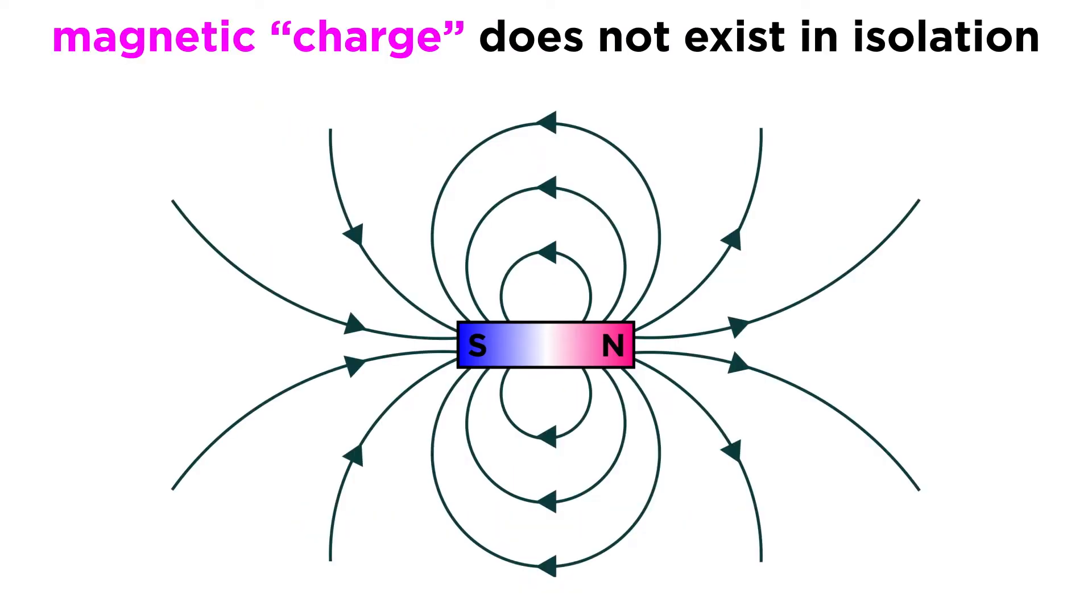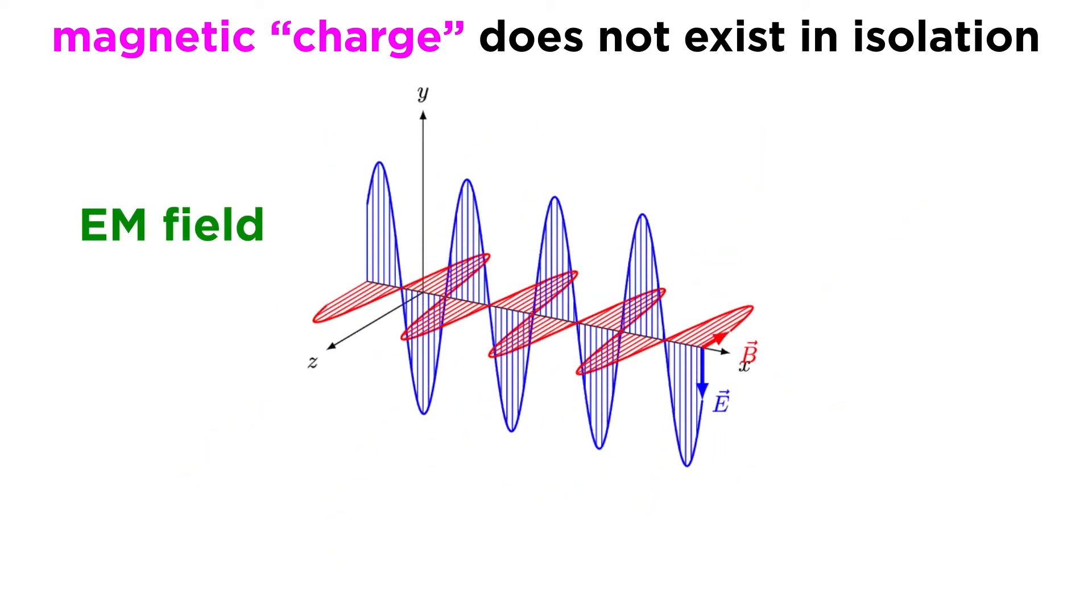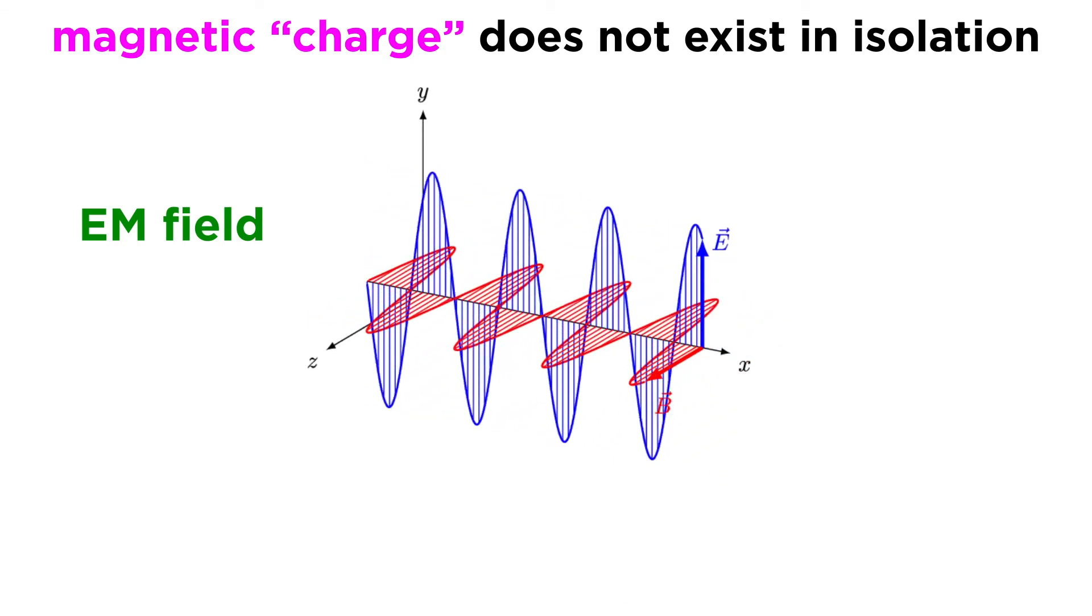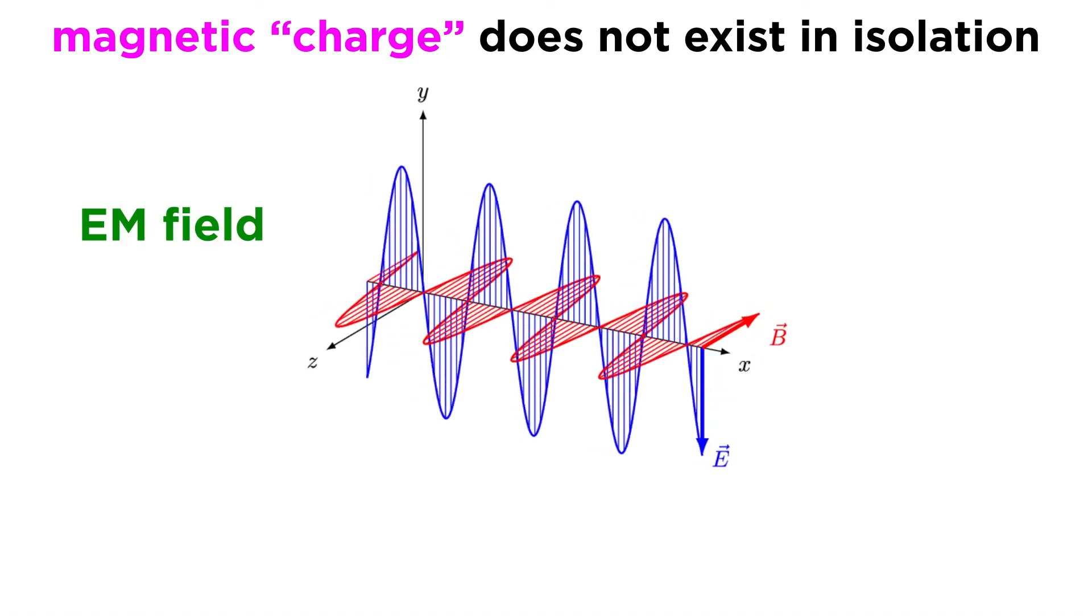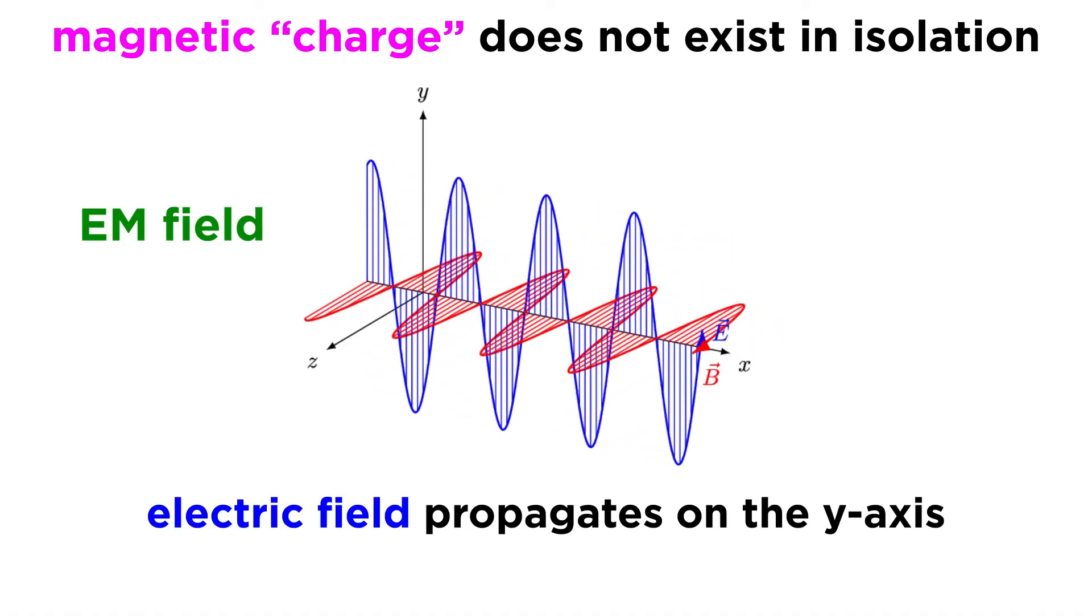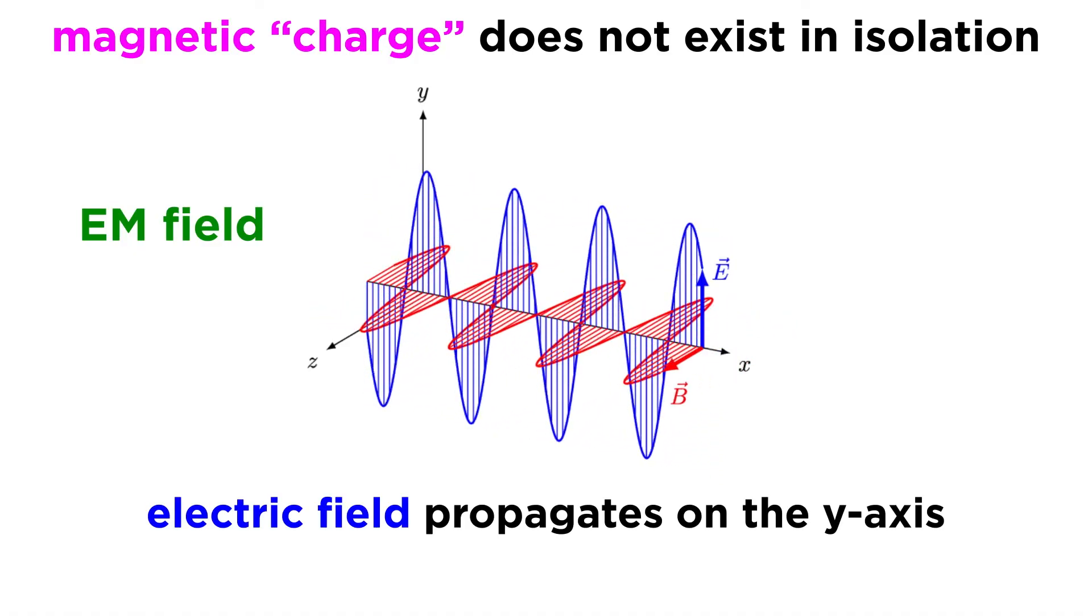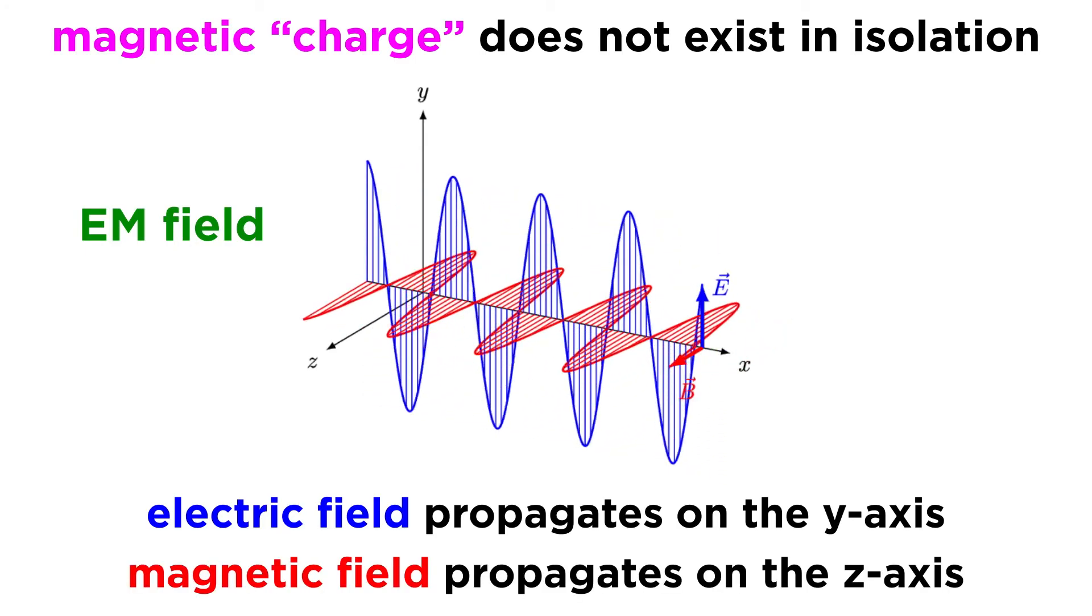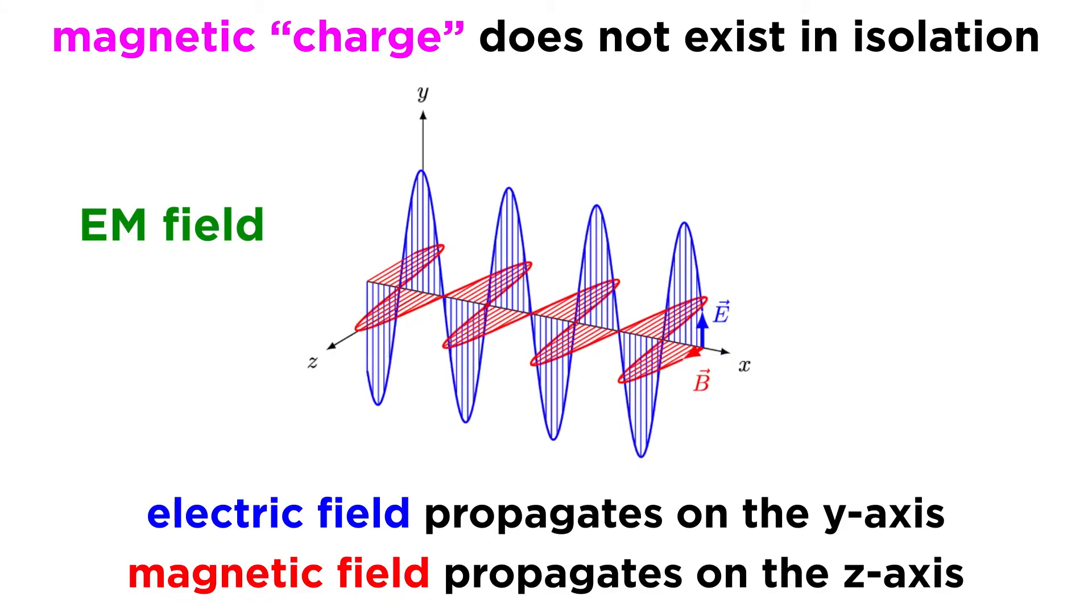Unlike with the electric field, magnetic charge does not exist in isolation. Magnetic poles must always exist in apparent pairs. This is mathematically expressed within Gauss's law and can be physically represented by observing the perpendicular nature of the components of the electromagnetic field, shown here with E representing the electric field propagating on the y-axis, and B representing the magnetic field propagating on the z-axis.